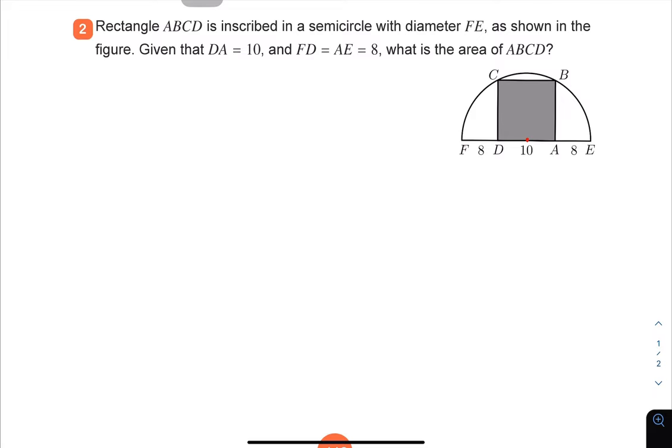If DA is 10 and FD equals AE equals 8, first we can calculate the radius, which is equal to 8 plus 10 plus 8 divided by 2, and that is 13.